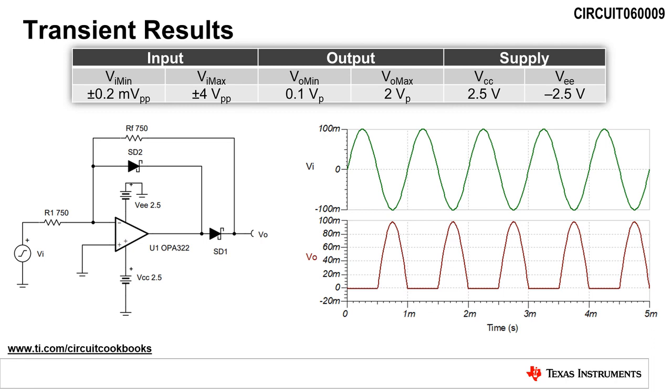A transient analysis of this circuit with a 1 kilohertz 200 millivolt peak-to-peak sinusoidal input yields a half-wave rectified output signal with an amplitude of 100 millivolts peak.